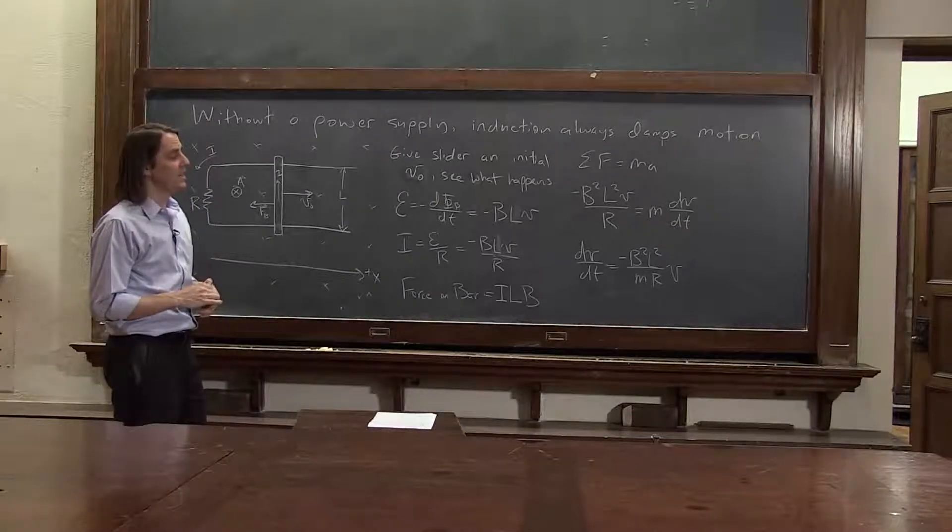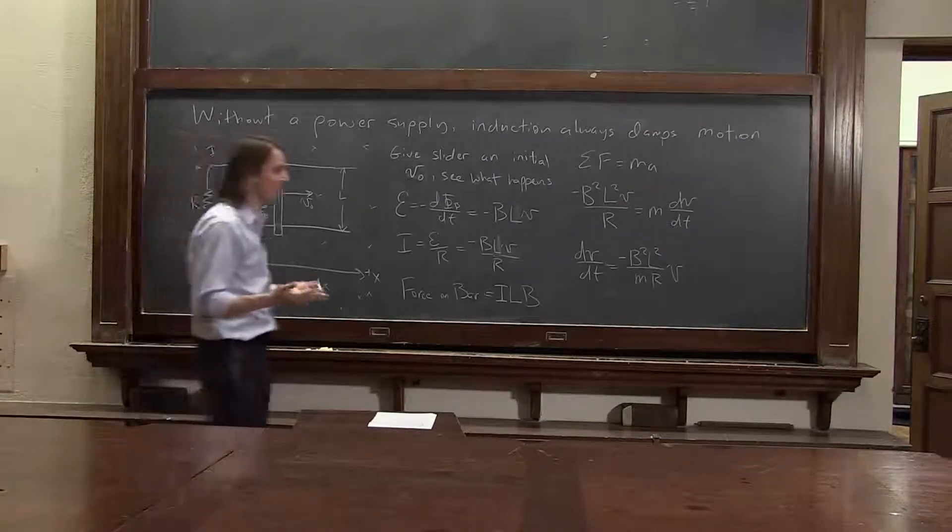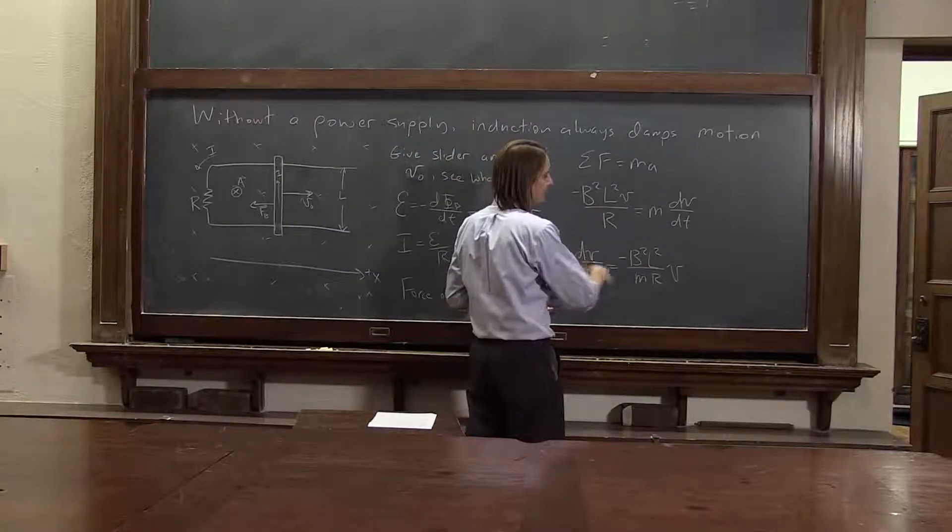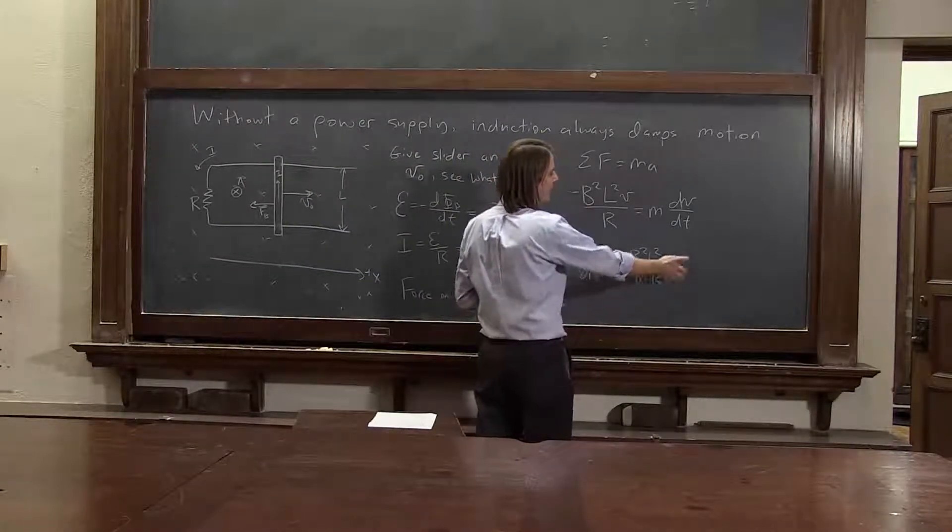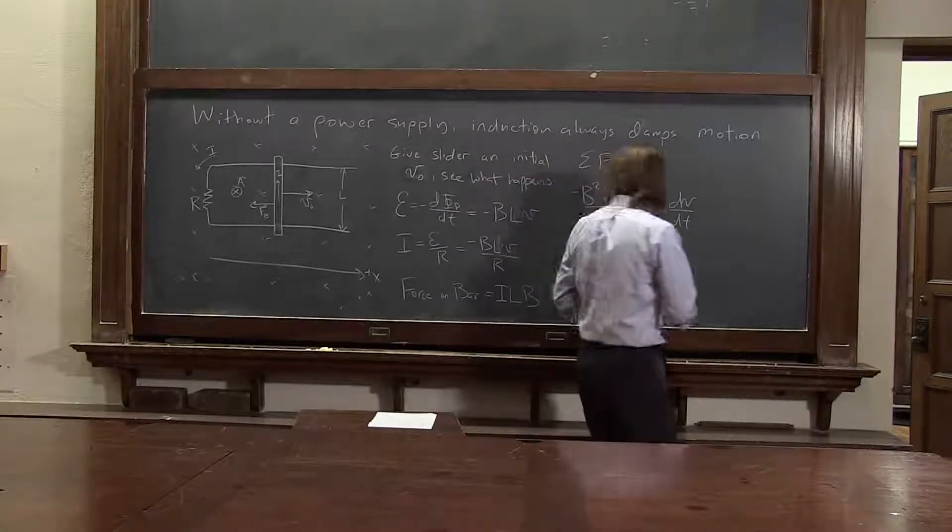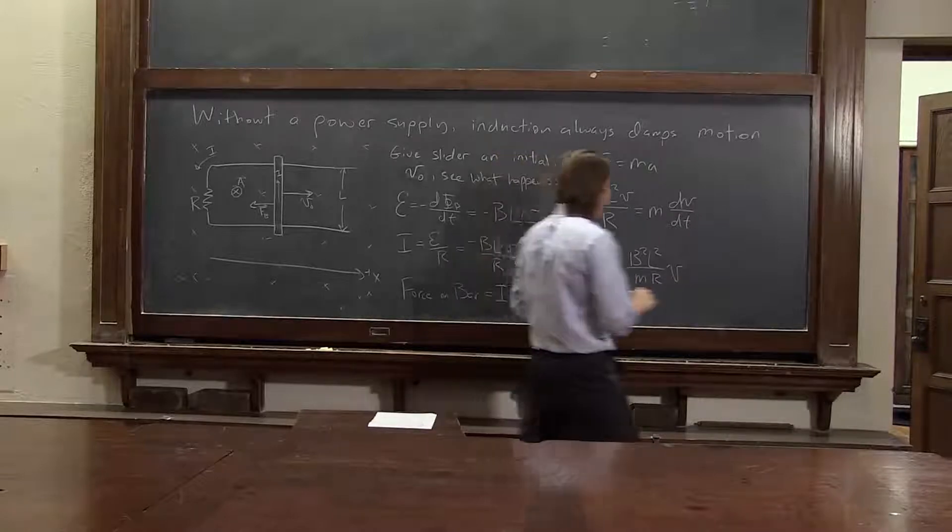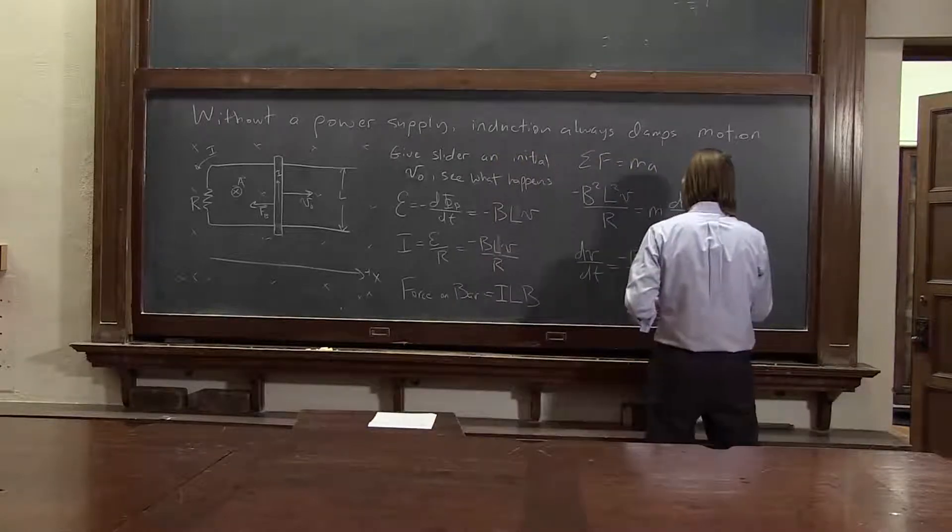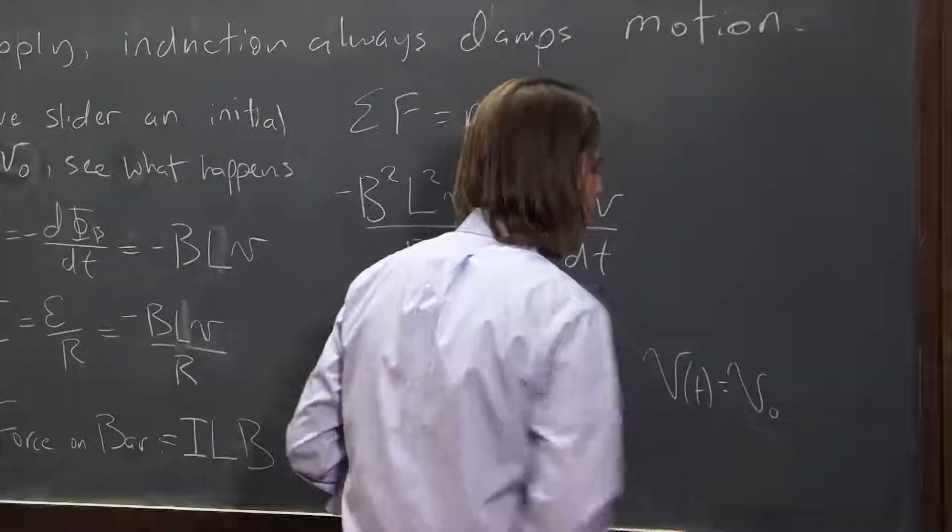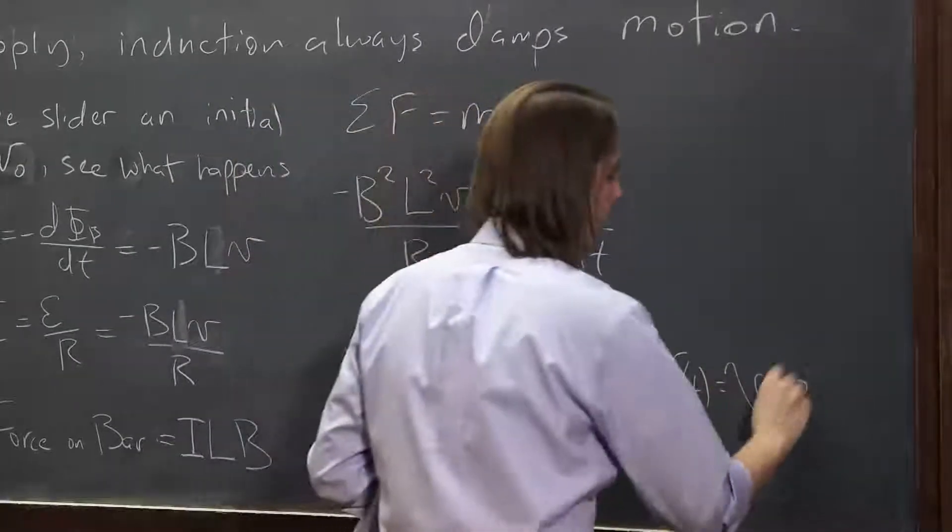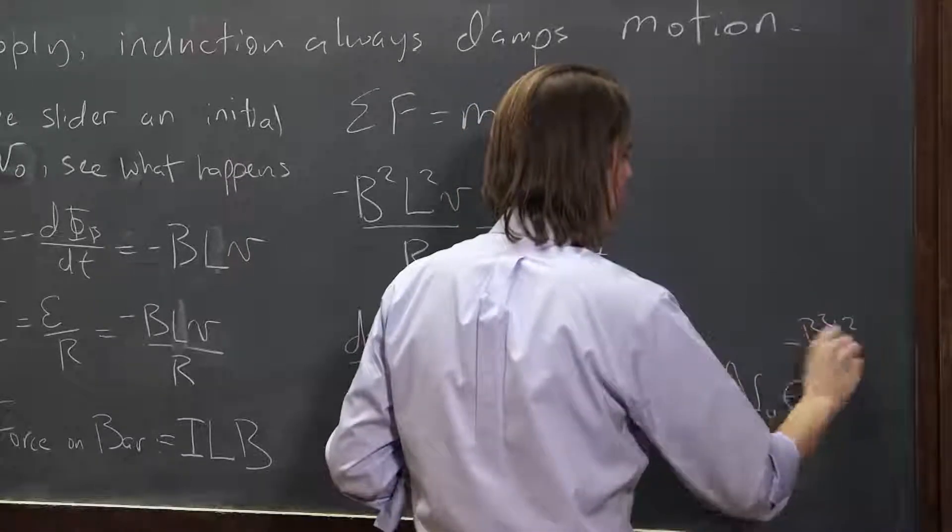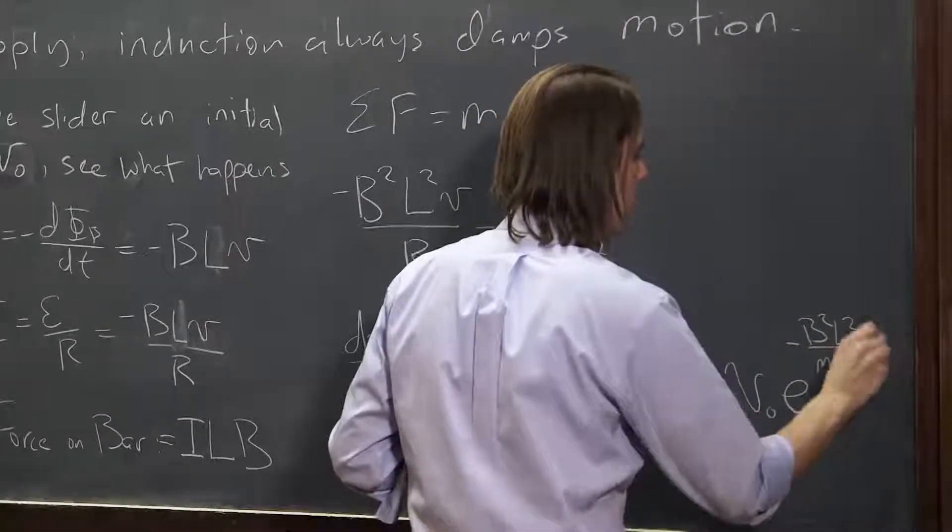And you may recognize that as exponential decay. So that's a differential equation. You can't solve it by integration. You can't just integrate this. You can integrate this side with respect to time and get v as a function of time, but you can't integrate that with respect to time because that's the function you're looking for. This is why differential equations are hard. But if you recognize that as exponential decay, then you know that what you're going to get is that v as a function of time is v naught, and then it's going to decay as e to the minus b squared L squared over m R t.